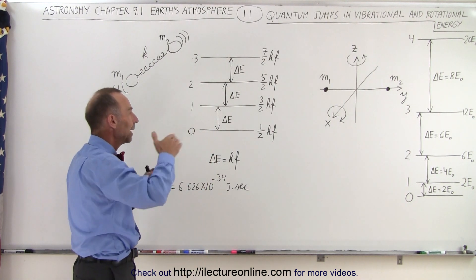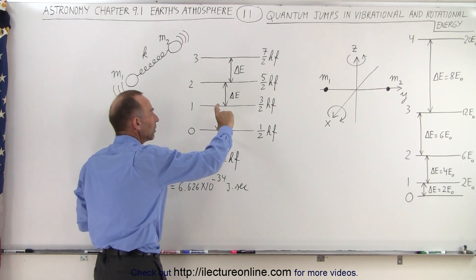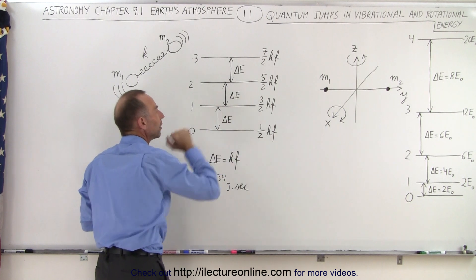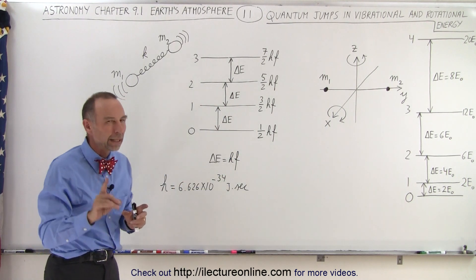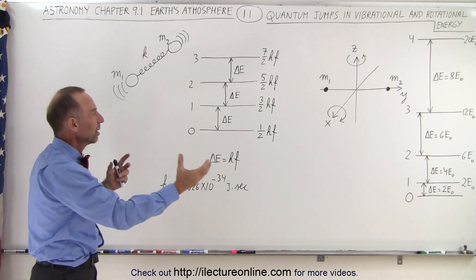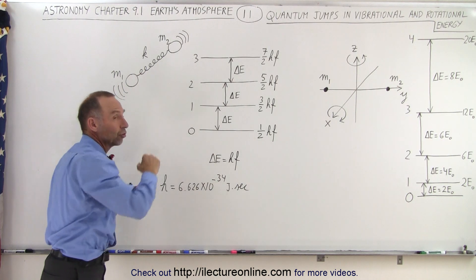So the only way that the atom can get to the next vibrational state is by adding the amount of energy required to exactly go from one state to the very next state. Well, not necessarily exactly, because there could be additional energy obtained at the same time. Instead of just only having vibrational mode transitions, there could be a combination of vibrational mode and rotational mode.